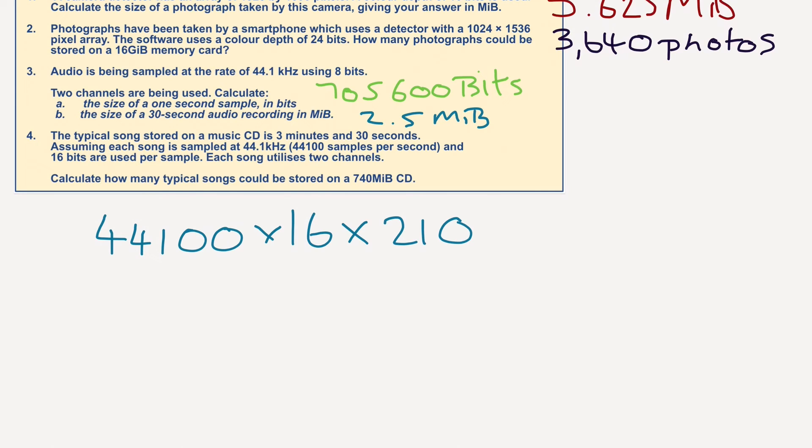That's the number of seconds - 180 plus 30. And then we're going to times it by 2, because each song uses two channels. So we get, in bits, a grand total of 296,352,000 bits.